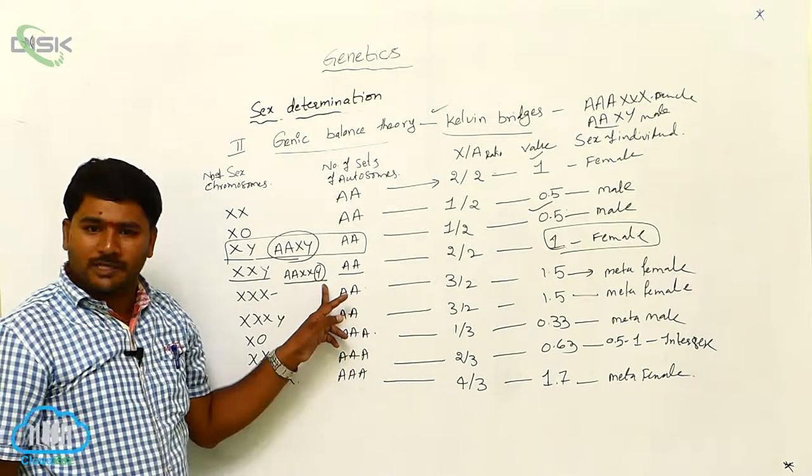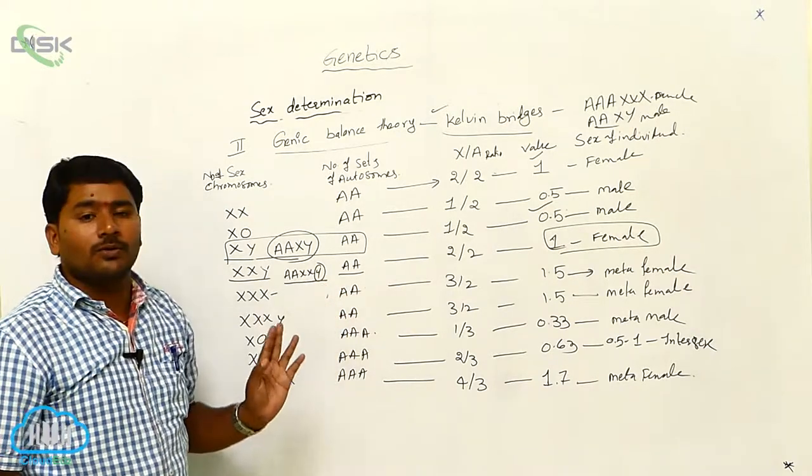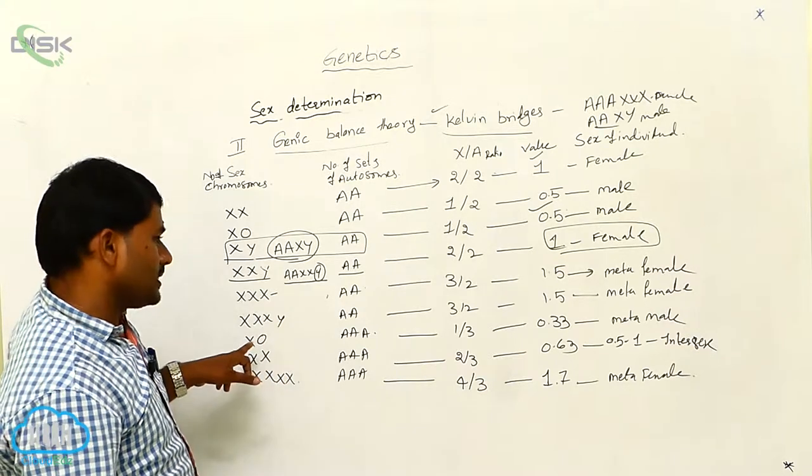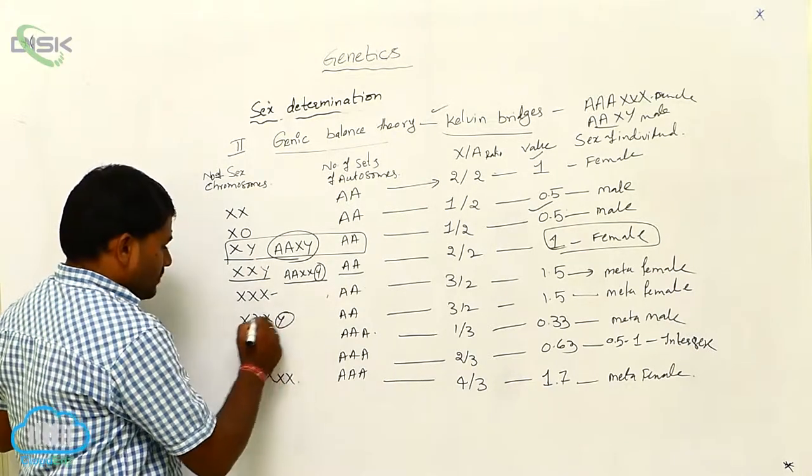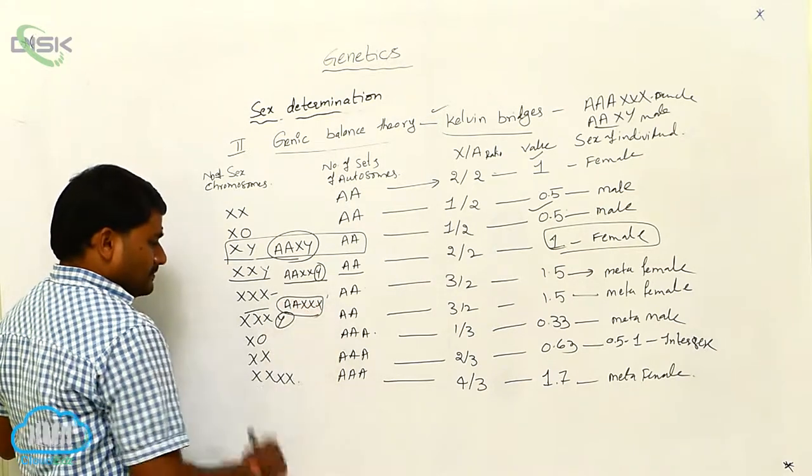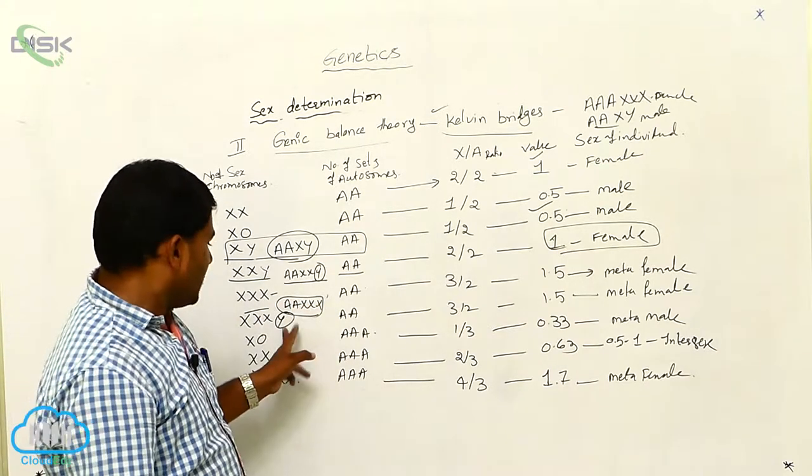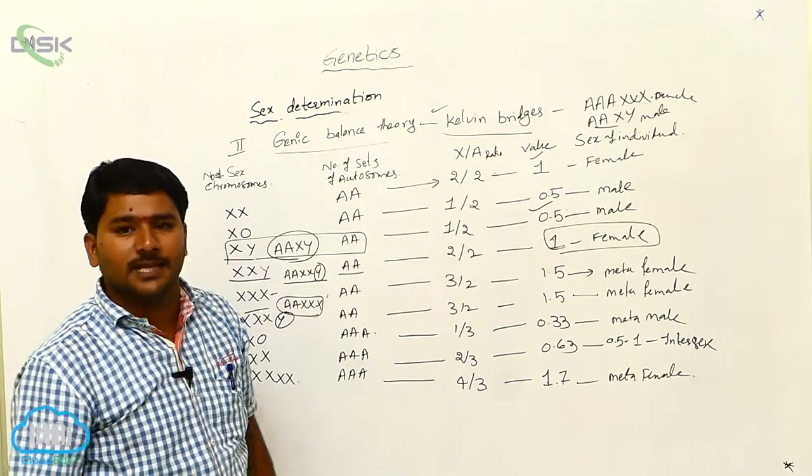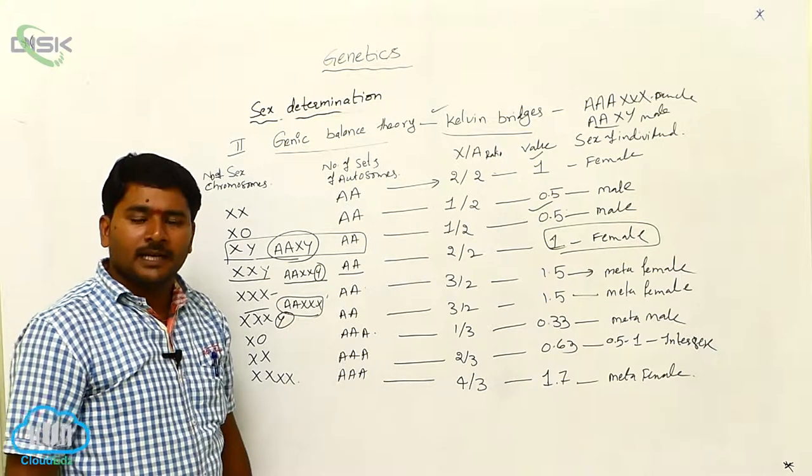So even the Y chromosome is present, there is no male sex. If you take this one, even the Y chromosome here, if you take XX, AA, XXX. So what is happening here? Even though Y chromosome is present here, it is not determining the sex. Y chromosome is not determining the sex.